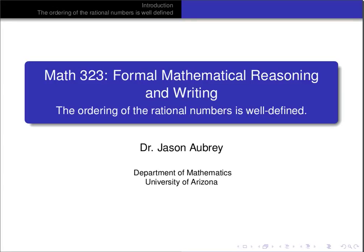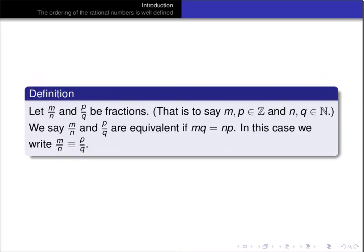In this video, we're going to prove that the ordering of the rational numbers is well-defined. Our definition of the rational numbers begins with the notion of a fraction, which we want to momentarily distinguish from a rational number. If we let m over n and p over q be fractions, we say that the fractions are equivalent if m times q is equal to n times p.